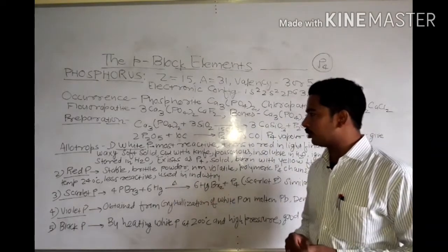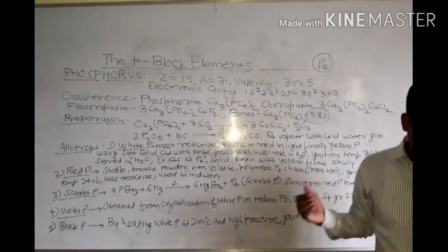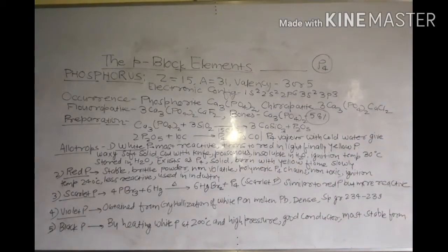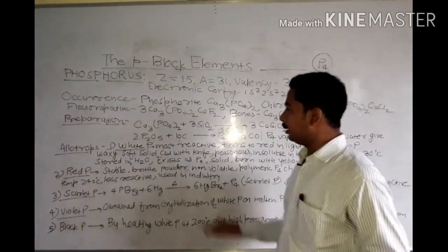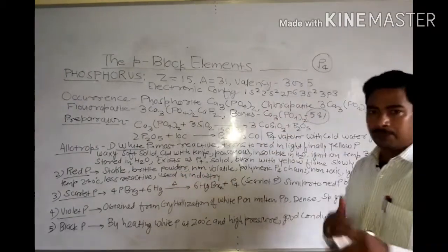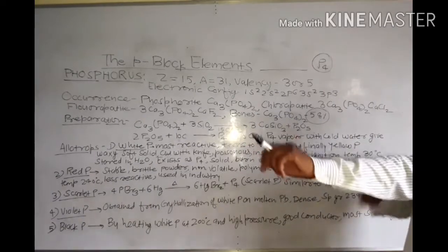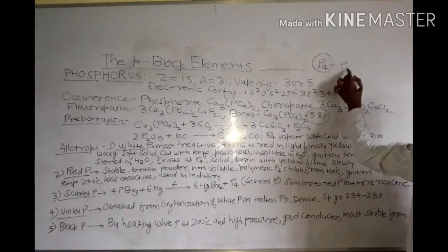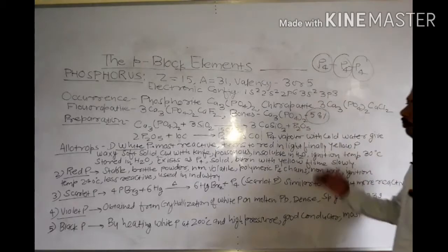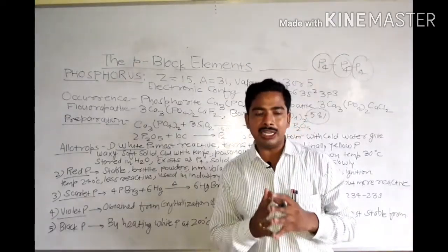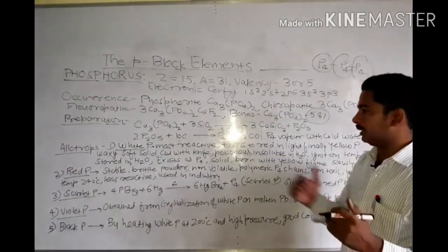Next is red phosphorus. Red phosphorus, unlike white phosphorus, is stable and brittle, and exists in powder form. It occurs in a polymeric layer form. The P4 molecule is the monomer, and when we combine P4 molecules it becomes red phosphorus — so red phosphorus is a polymer of white phosphorus.